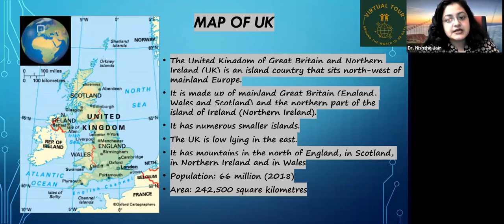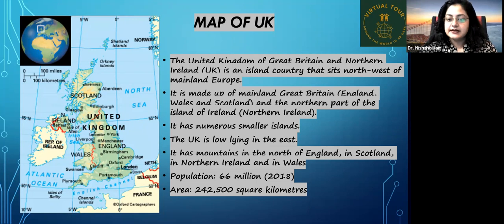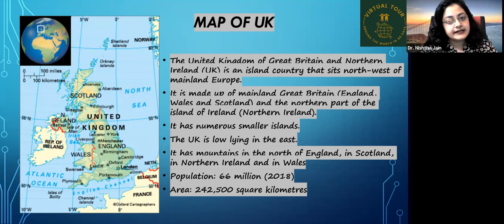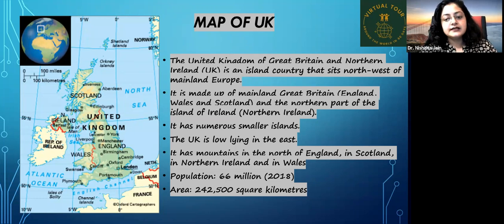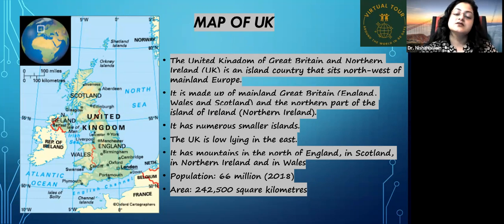Now the map of the United Kingdom. The UK is an island country that sits northwest of mainland Europe. It is made up of mainland Great Britain — which comprises England, Wales, and Scotland — as well as the northern part of the island of Ireland, that is Northern Ireland. It has numerous smaller islands. The UK is low lying in the east and has mountains in the north of England, in Scotland, in Northern Ireland, and in Wales. The population, according to the 2018 report, is 66 million, and the area is 242,500 square kilometers.